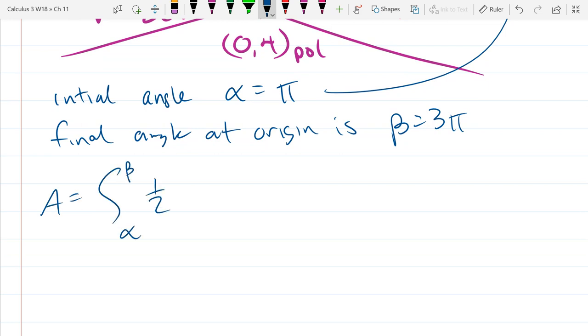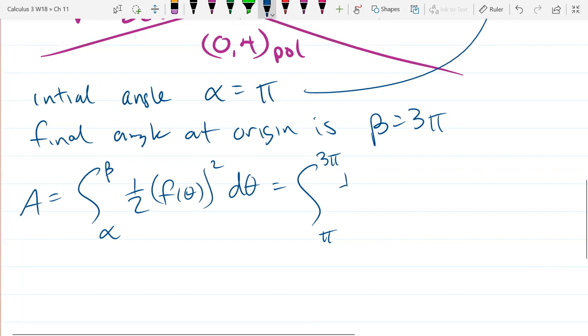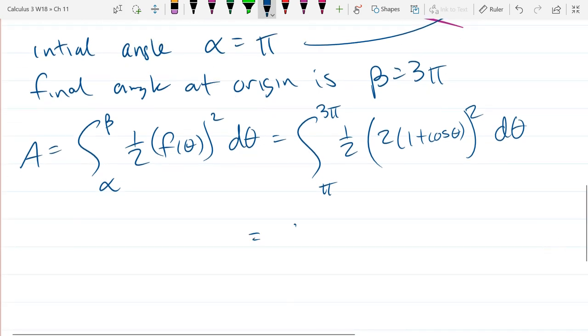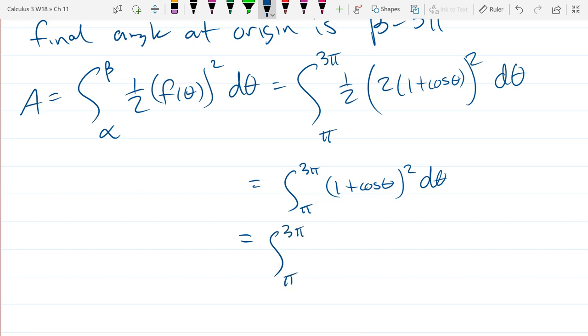So the area formula we just wrote down, α, β, one-half, f(θ) squared, dθ. So we got α and β, π to 3π. You can use symmetry, but again, you have to know what the symmetry is on the graph.